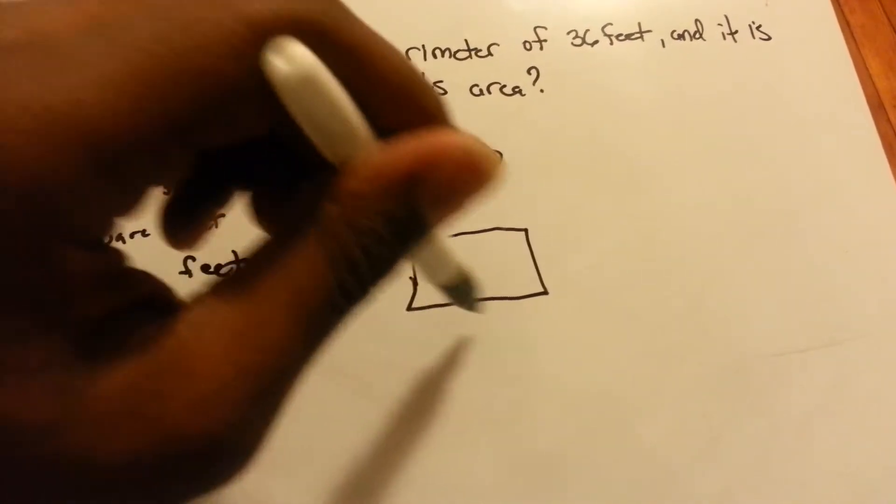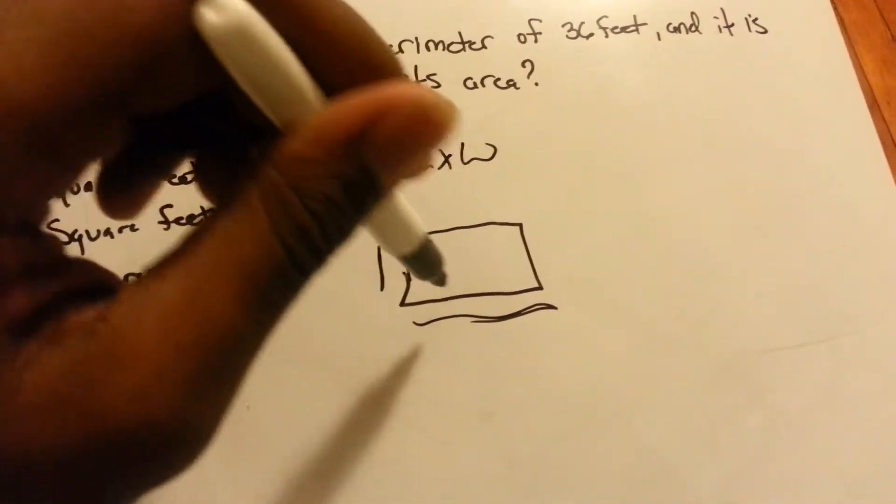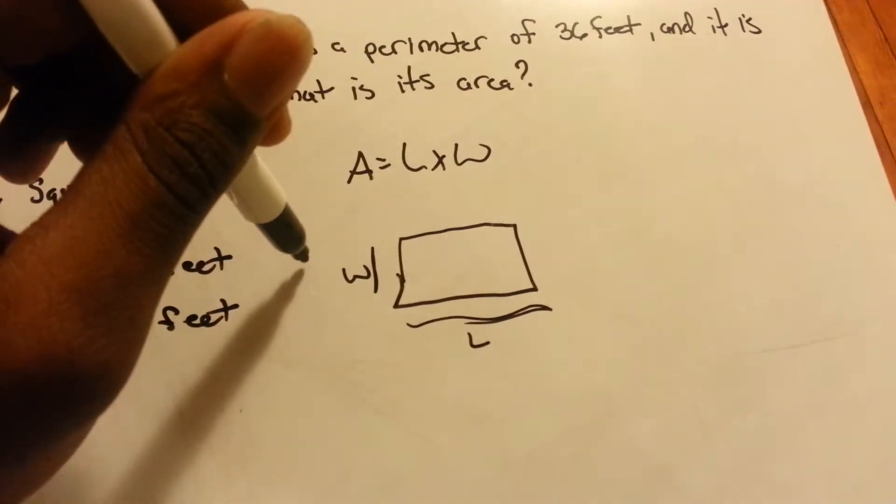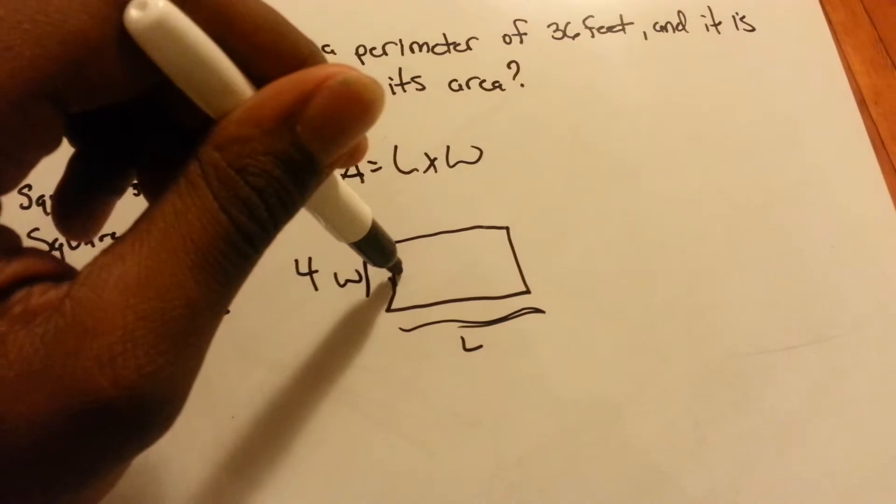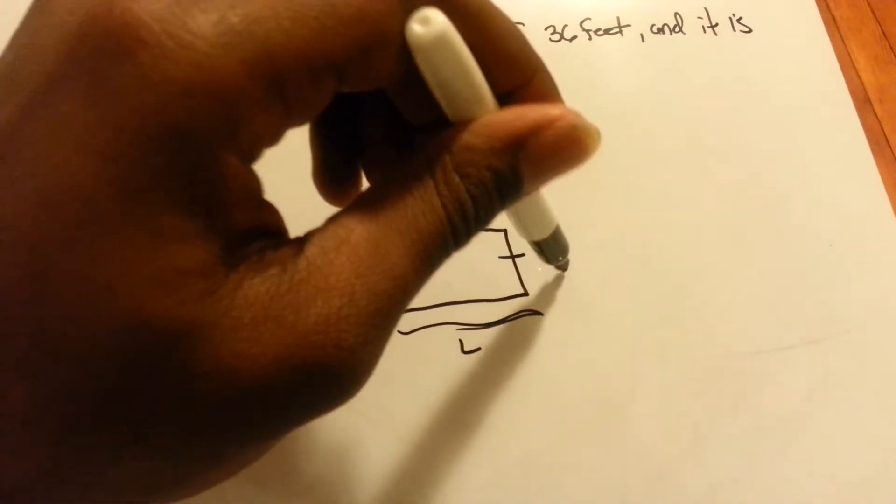So the width is 4, length times width. It's already saying that the width is 4. So with a rectangle we know that the opposite sides are the same length.